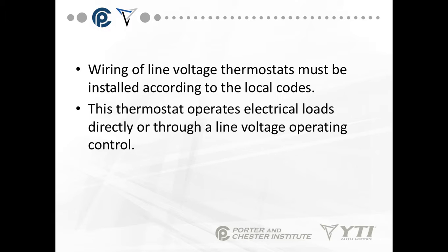The thermostat operates the electrical loads directly or through a line voltage operating control. The electrical code is NFPA 70A or 70, and you have to follow whatever local version it is. All junctions on line voltage have to be inside a metal junction box that's covered.